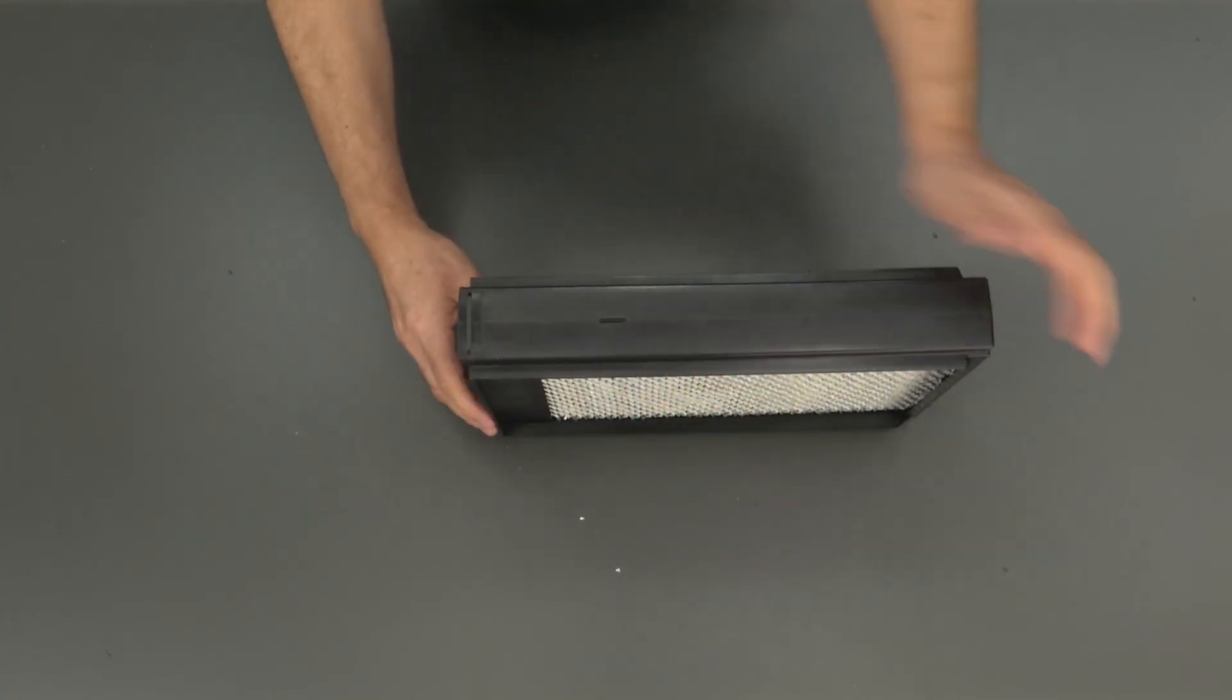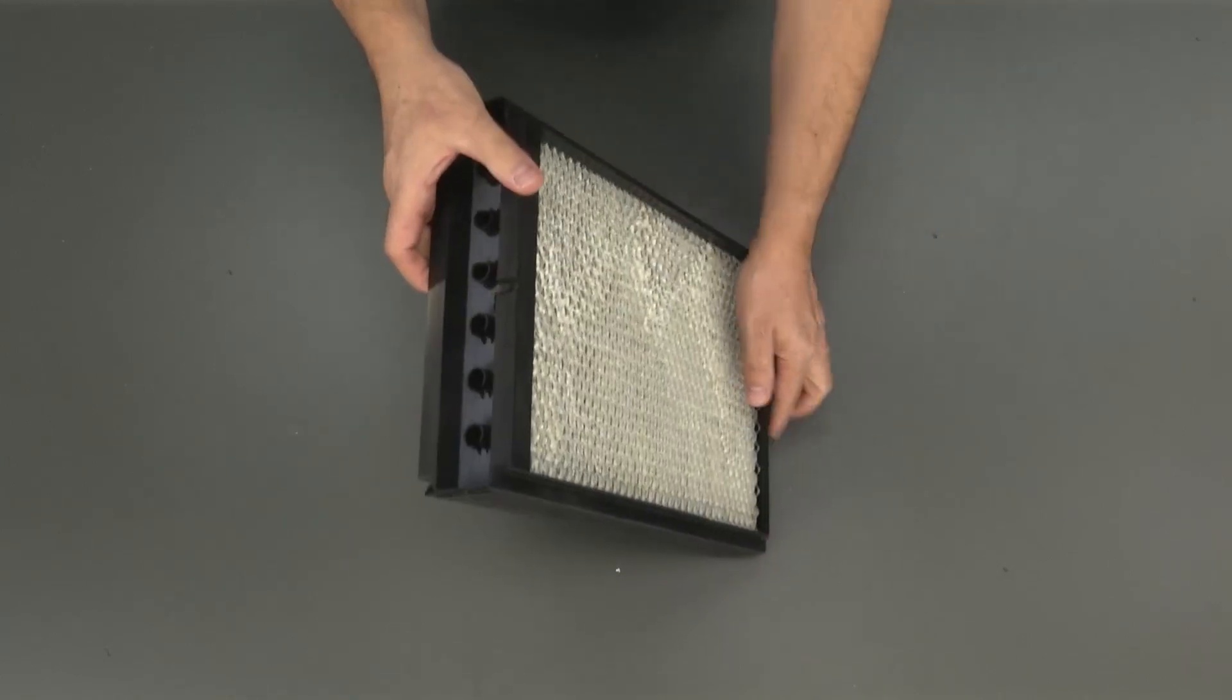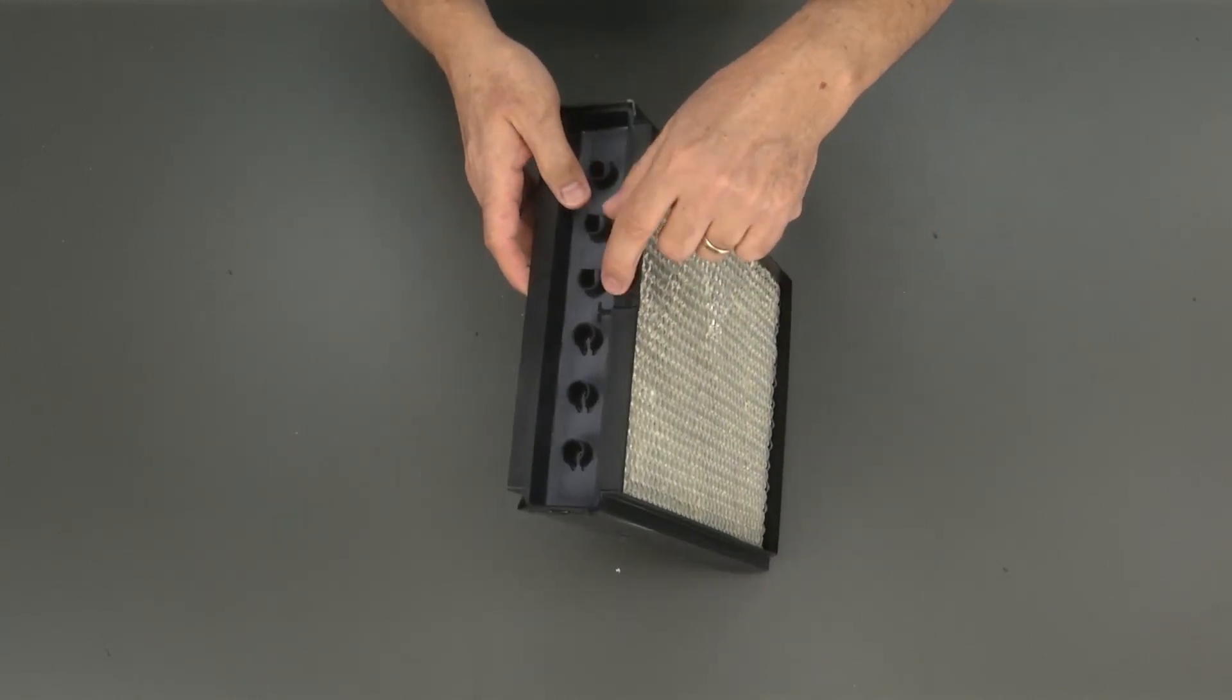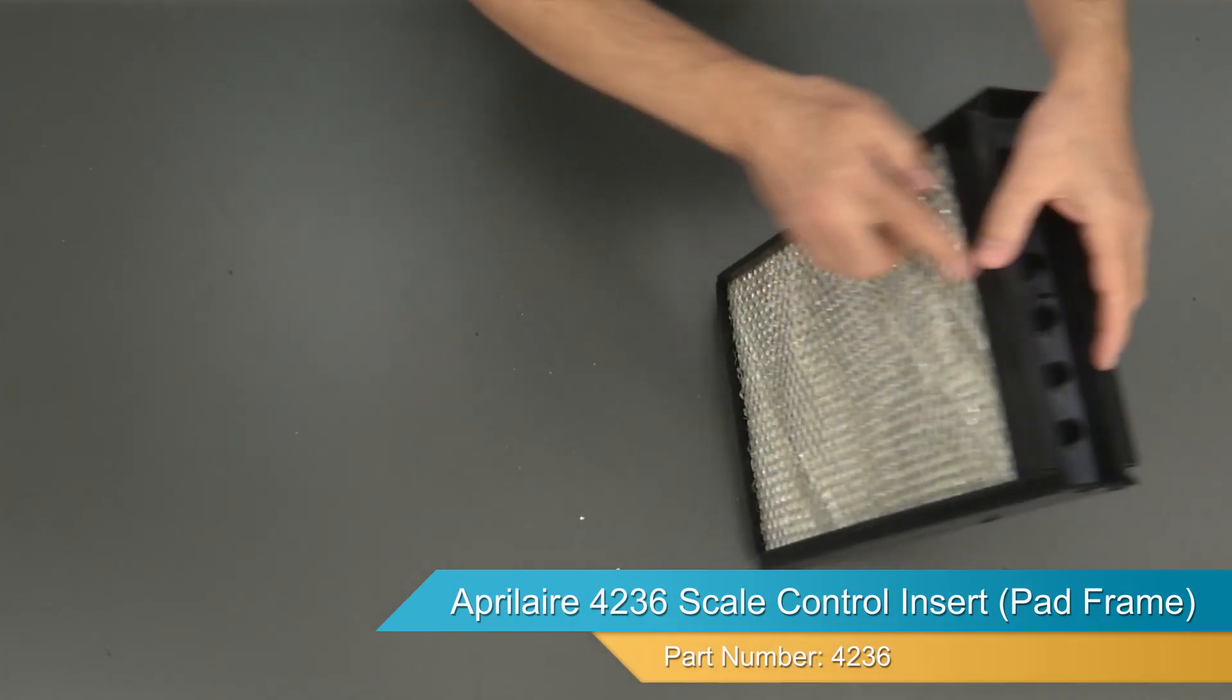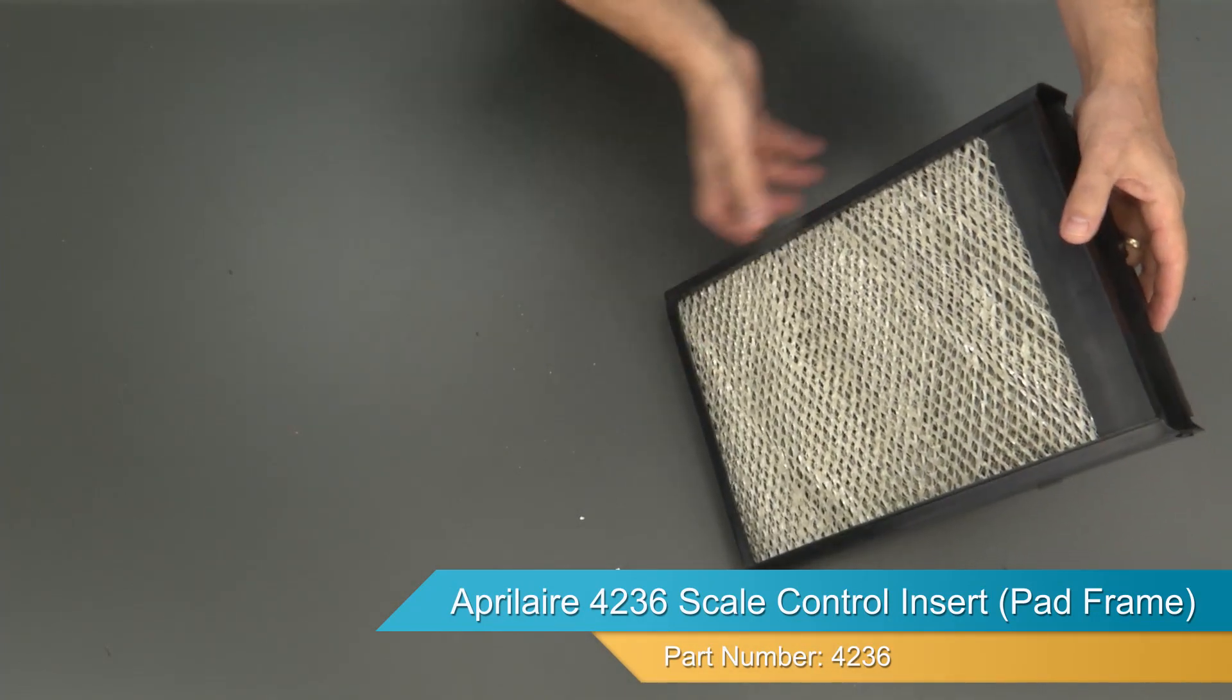The assembly is now complete. You'll notice this side has a little notch in it. That side must go towards the inside of the humidifier. This side goes towards the furnace or ductwork.